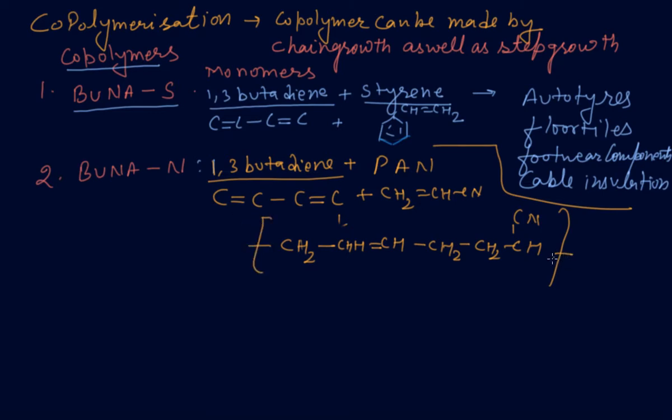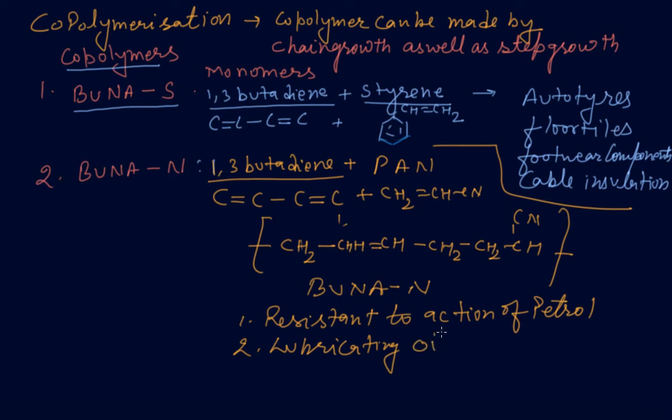BUNA-N is resistant to action of petrol, lubricating oil, and organic solvents. It is used in making oil seals, tank lining, and hoses.